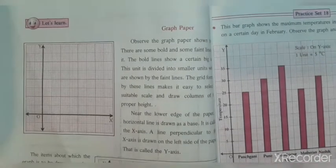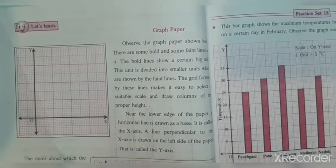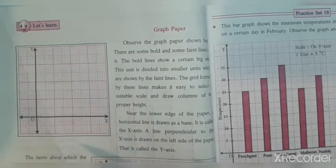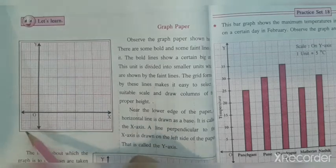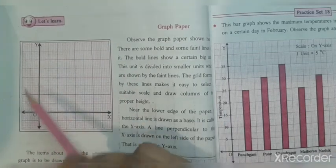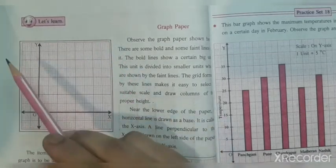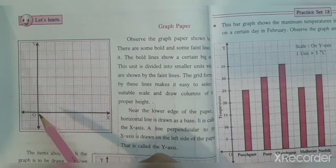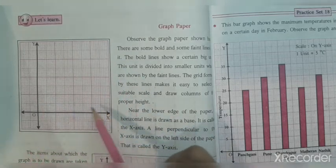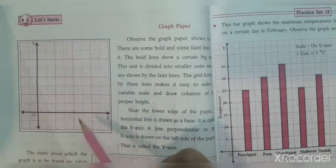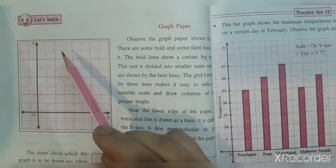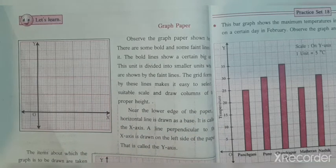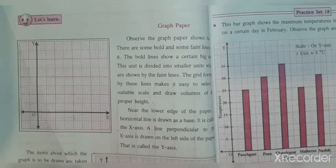In this bar graph method we will require a graph paper. In your textbook on page number 36 they have shown a graph paper. You will see that in this graph paper there are lines and boxes — horizontal lines and vertical lines. There are some darker ones and some lighter lines.